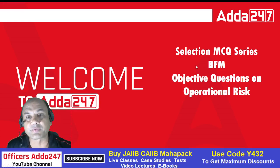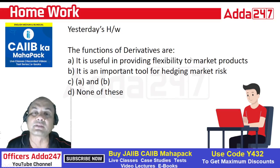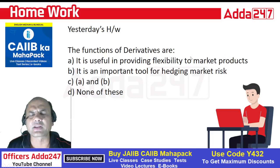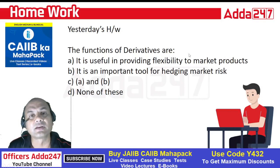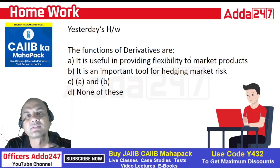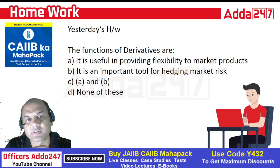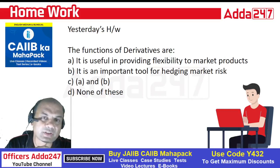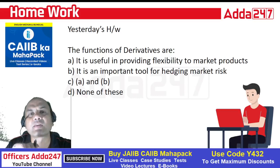There are three types of risks — type in the comment section: which are the three risks considered in Basel 2? Everyone type fast. The answer is credit, market, and operational risk.